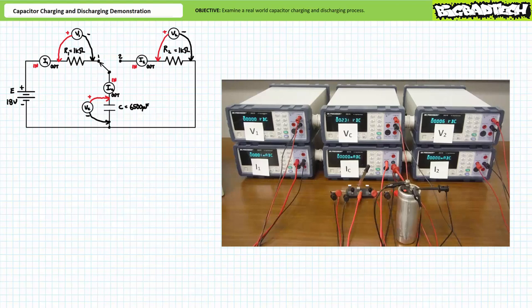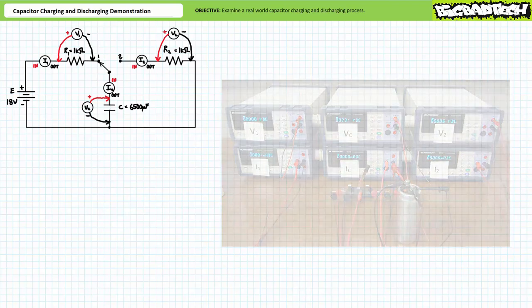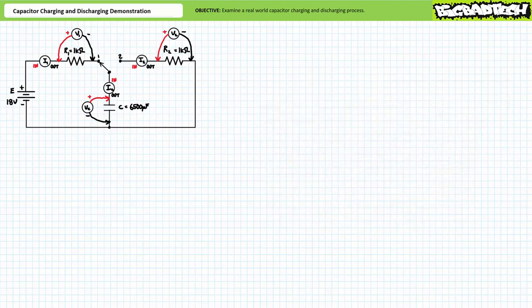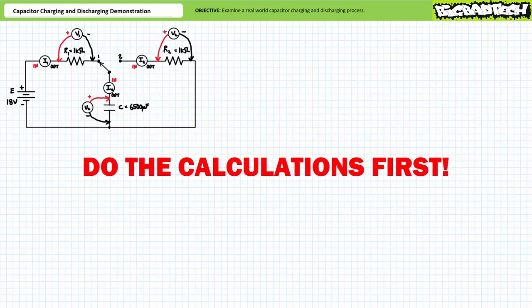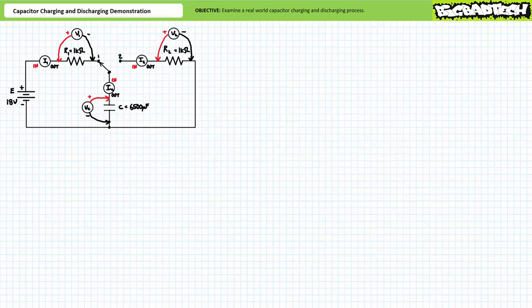Here's the real-world setup we'll be using today. All six DMMs will allow us the luxury of watching this charge and discharge process unfold in real time. Let's examine the capacitor charge process first. Step zero: do the calculations first. Let's see if our observations match our expectations.